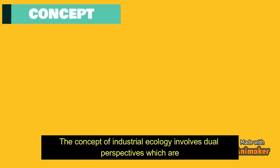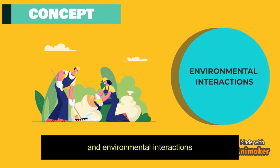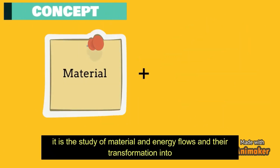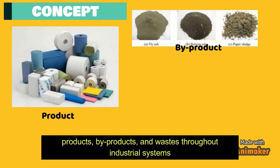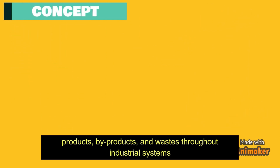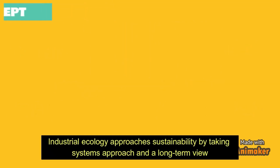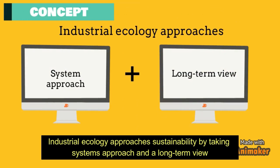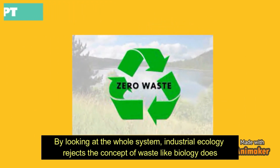The concept of industrial ecology involves dual perspectives, which are product competitiveness and environmental interactions. It is the study of material and energy flows and their transformation into products, by-products, and waste throughout industrial systems. It is then released to the air, water, land, and biota. Industrial ecology approaches sustainability by taking a systems approach and a long-term view. By looking at the whole system, industrial ecology rejects the concept of waste like biology does.